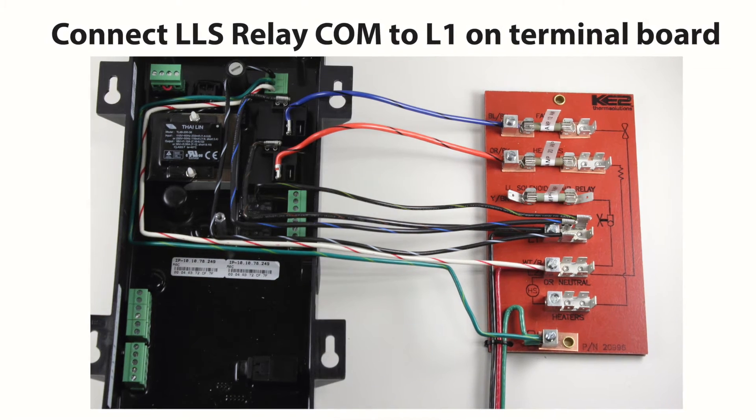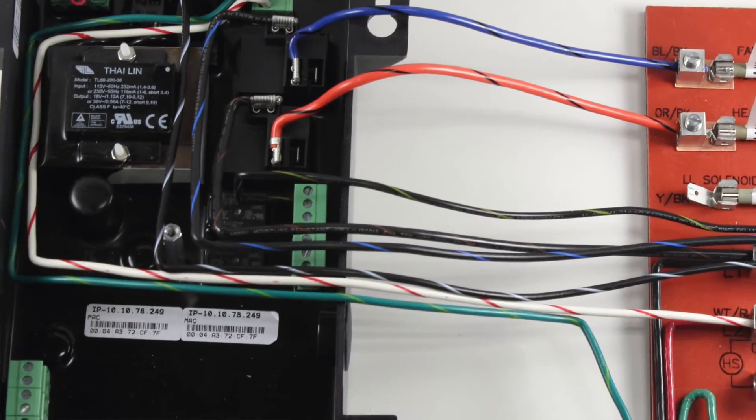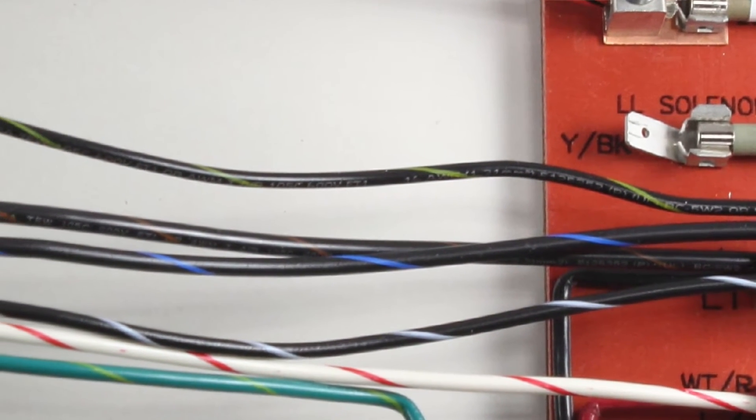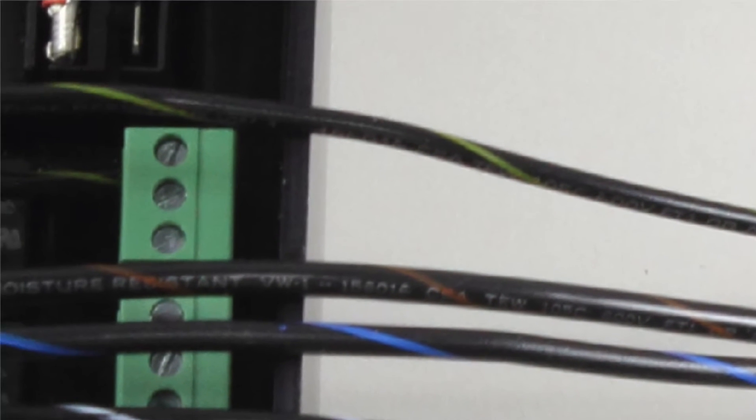Next, the liquid line solenoid relay dry contact needs power provided to the common terminal. Connect line 1 on the terminal board using the black with yellow stripe. Wire to the common on the liquid line solenoid relay as shown.